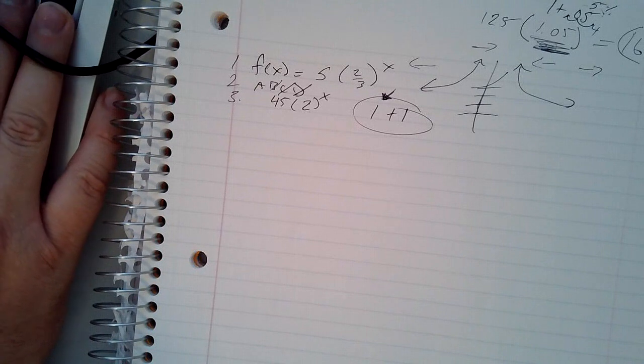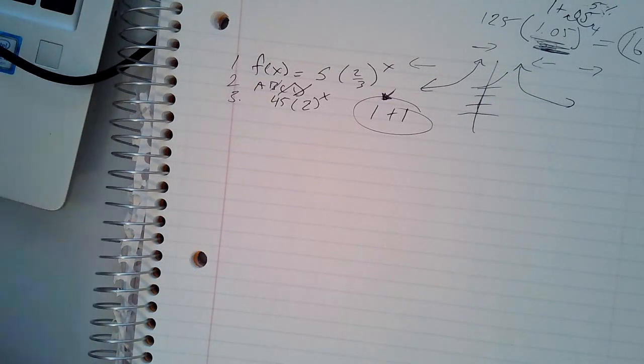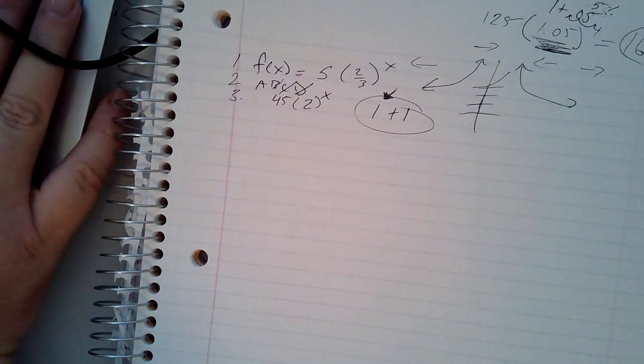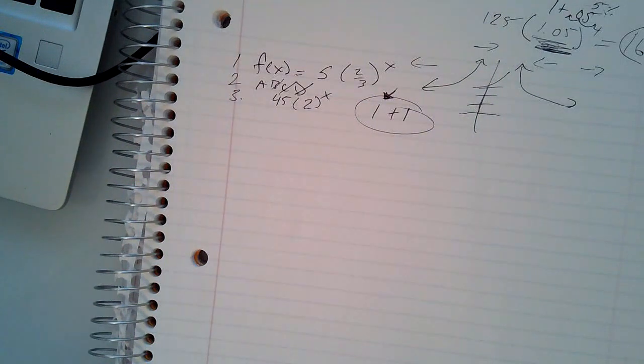Number four says the function f(x) = 50(0.91)^x models the amount Y of the prescription after X hours after it is taken by a patient. Which statement is true about the graph of the function? So you're looking at the equation. You can imagine what the graph is. It says the graph has a vertical asymptote. We haven't talked about vertical asymptotes, so you can automatically get rid of that one.